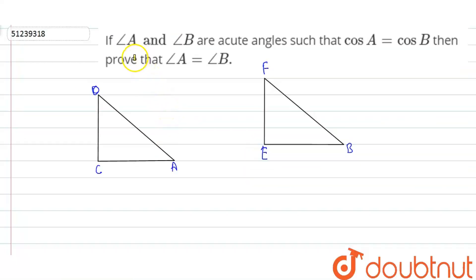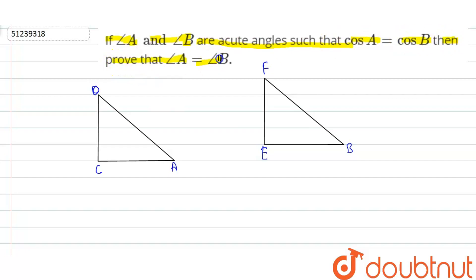Hello friends, welcome back. I hope you are enjoying the doubtnet question. If angle A and angle B are acute angles such that cos A is equal to cos B, then prove that angle A is equal to angle B.